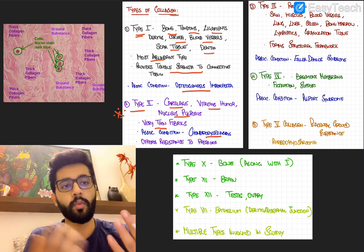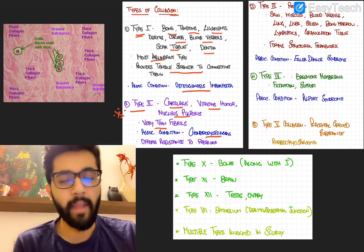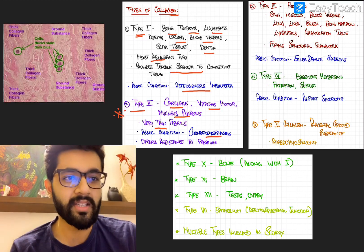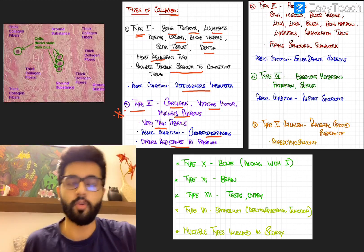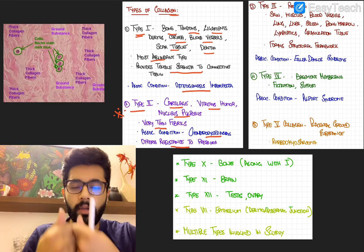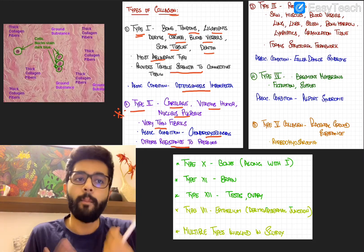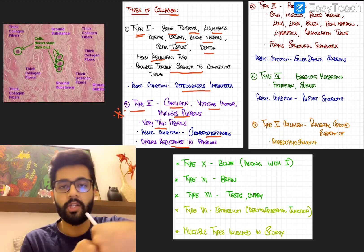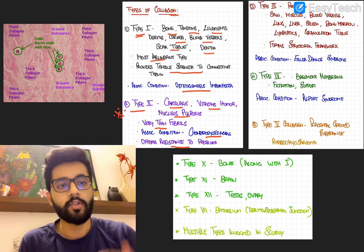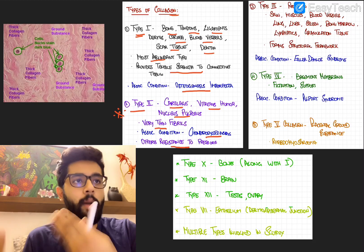And the main role or function of this collagen is to offer resistance to pressure. So we said type 1, which is the most common type, offers resistance to tension or provides tensile strength. And type 2 mainly offers some resistance to pressure. So remember, it's found in the cartilages, so it should obviously offer resistance to pressure.